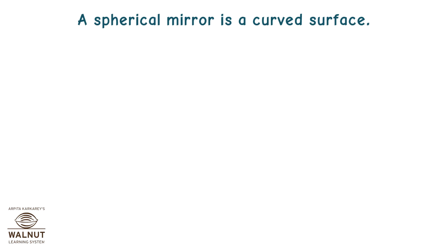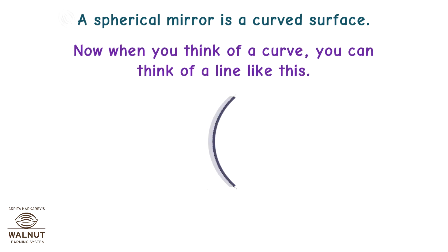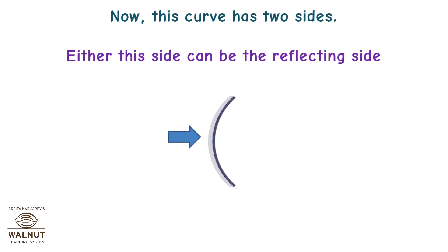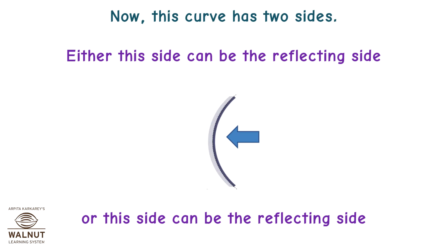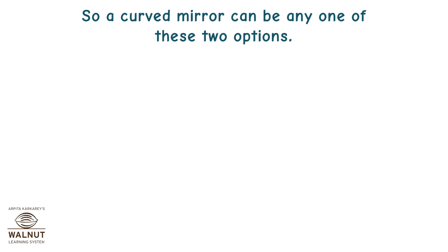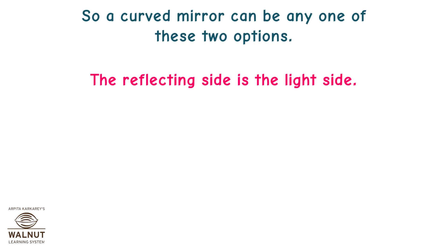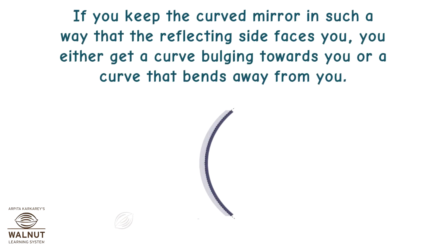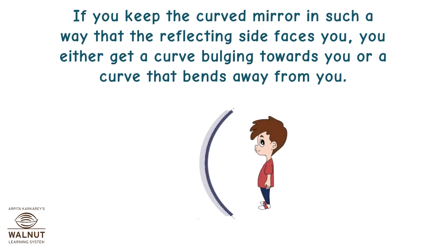A spherical mirror is a curved surface. When you think of a curve, you can think of a line like this. This curve has two sides — either side can be the reflecting side. So a curved mirror can be any one of these two options. The reflecting side is the light side, and the non-reflecting side is the dark side. If you keep the curved mirror so that the reflecting side faces you, you either get a curve bulging towards you or a curve that bends away from you.